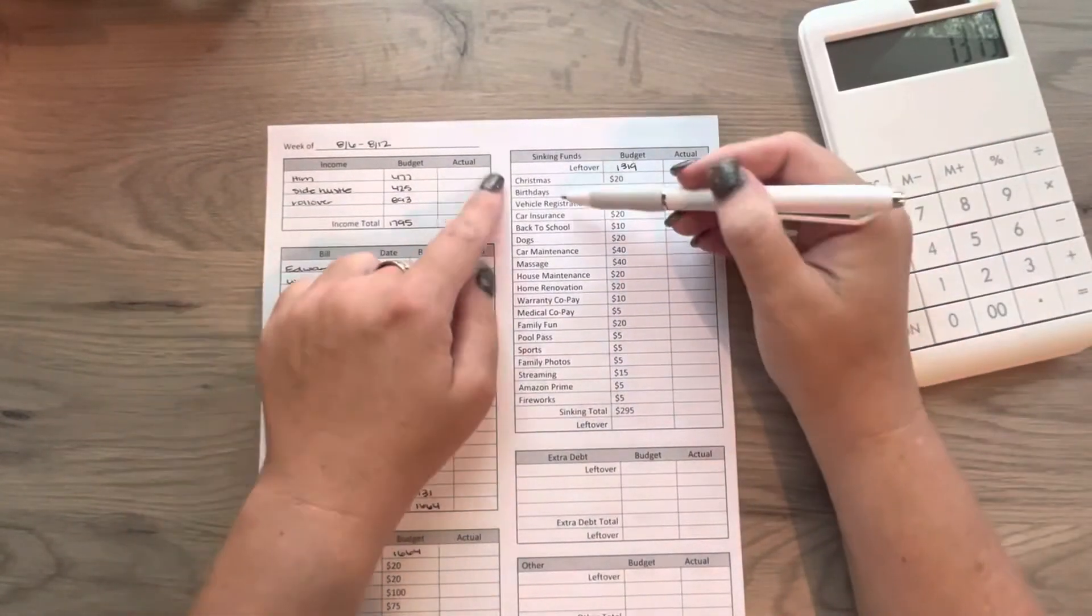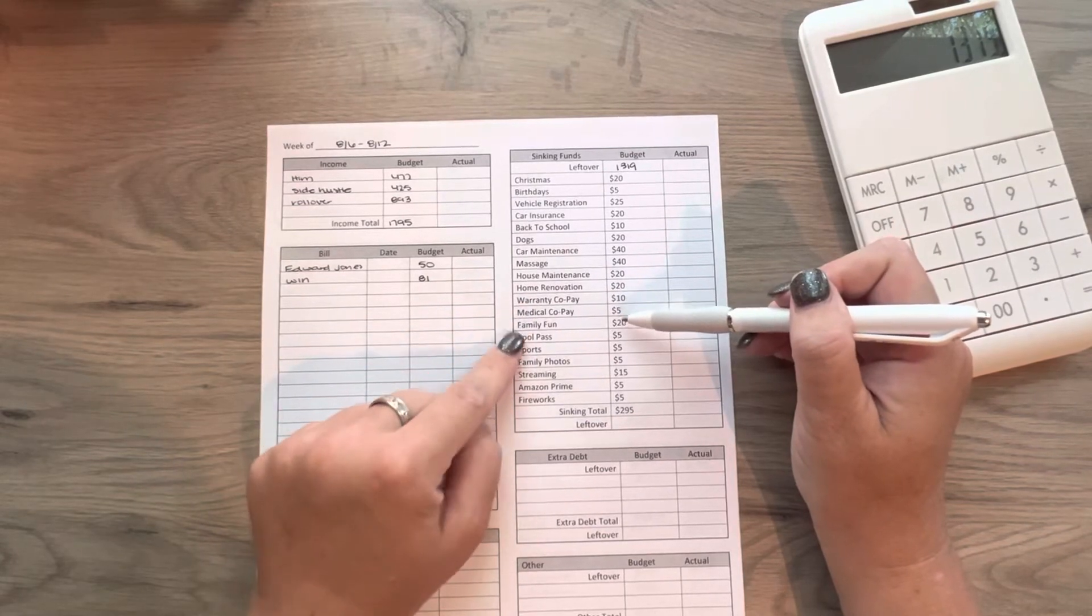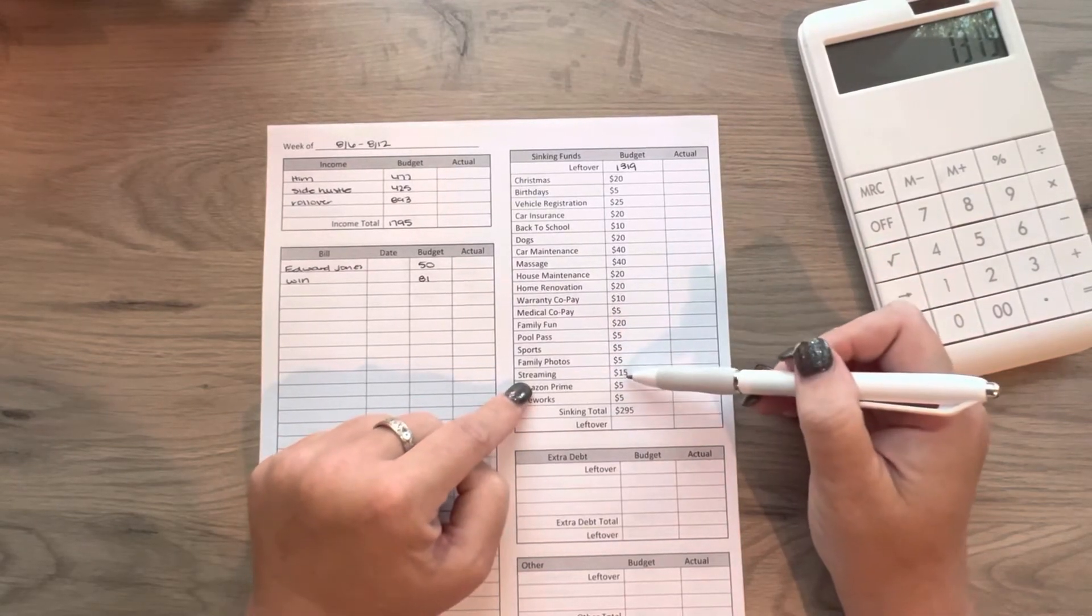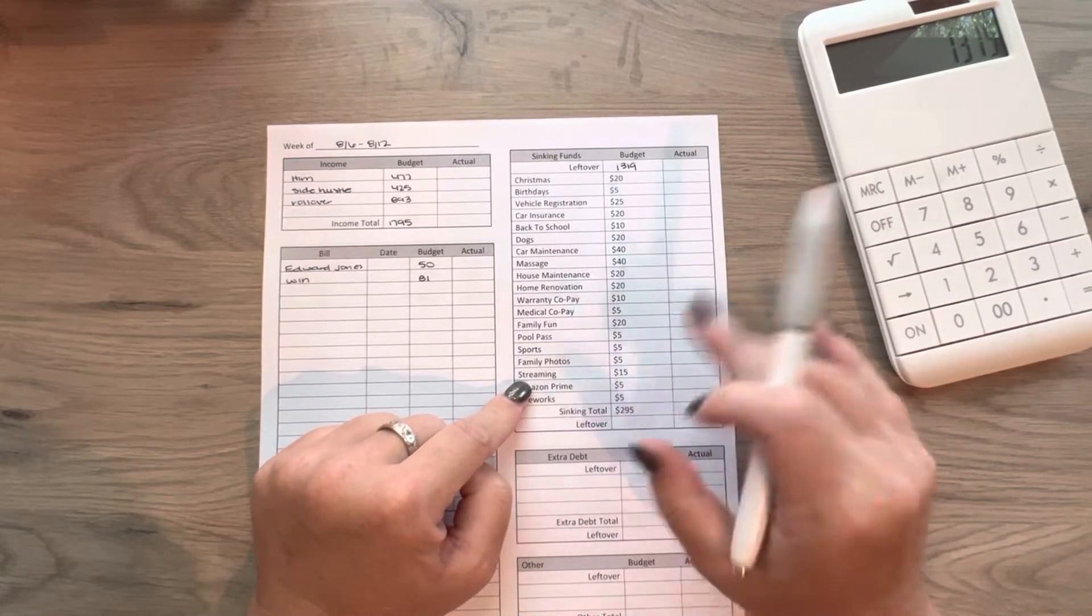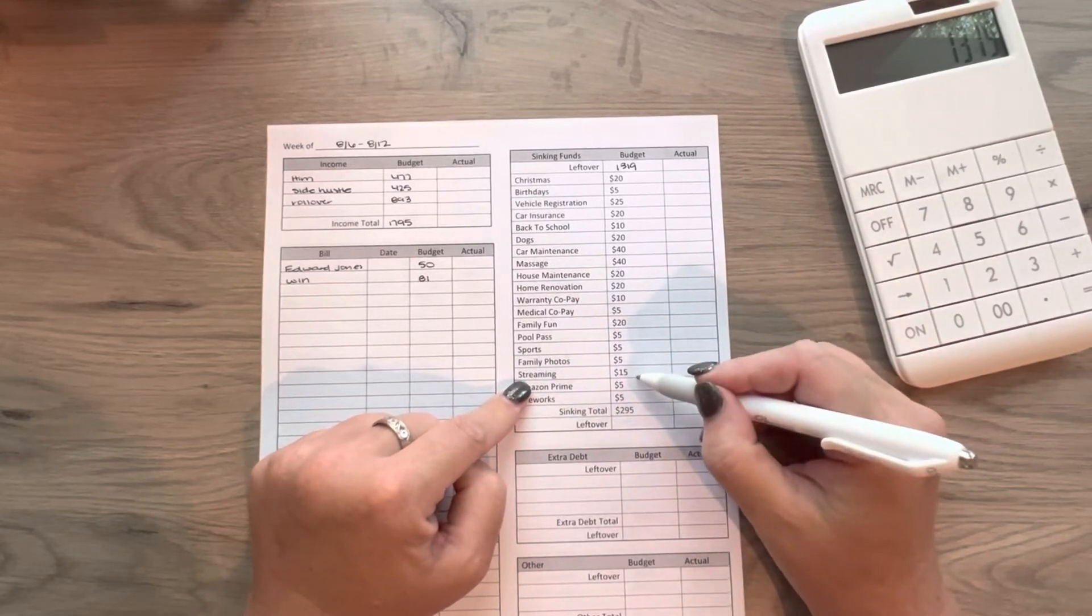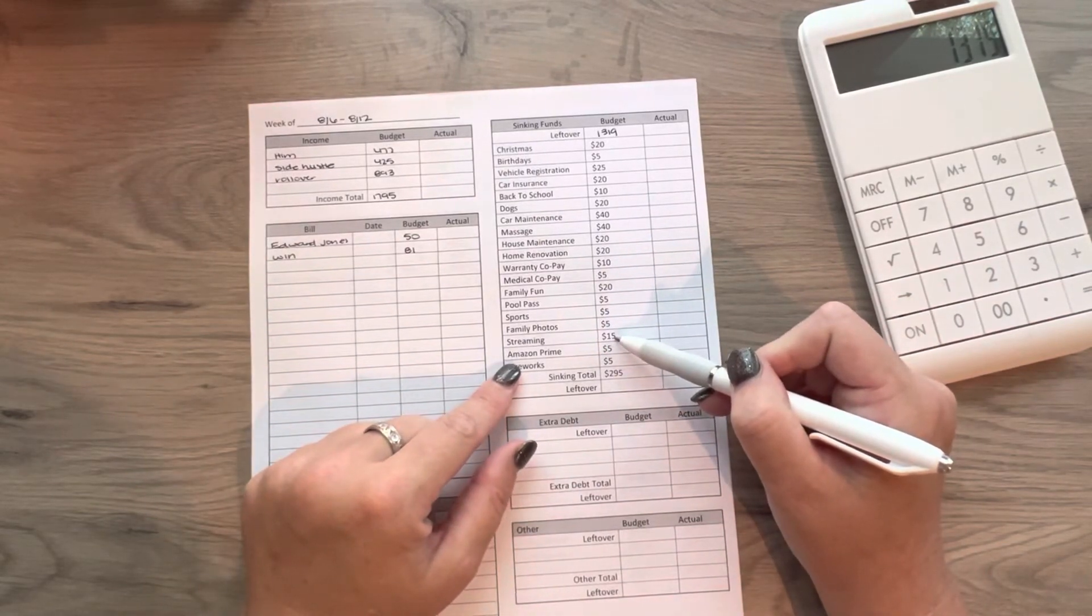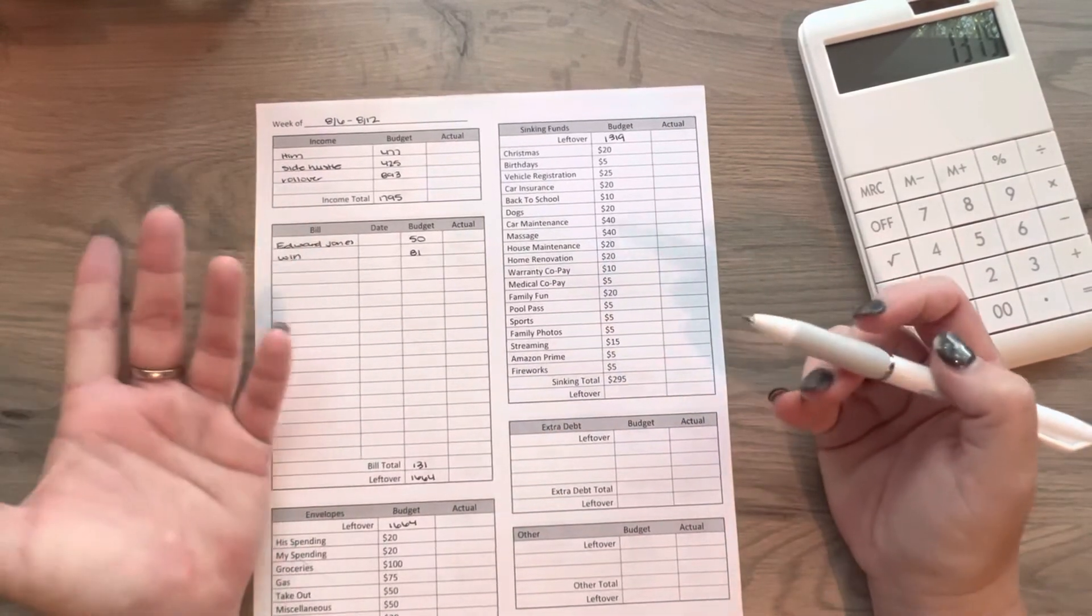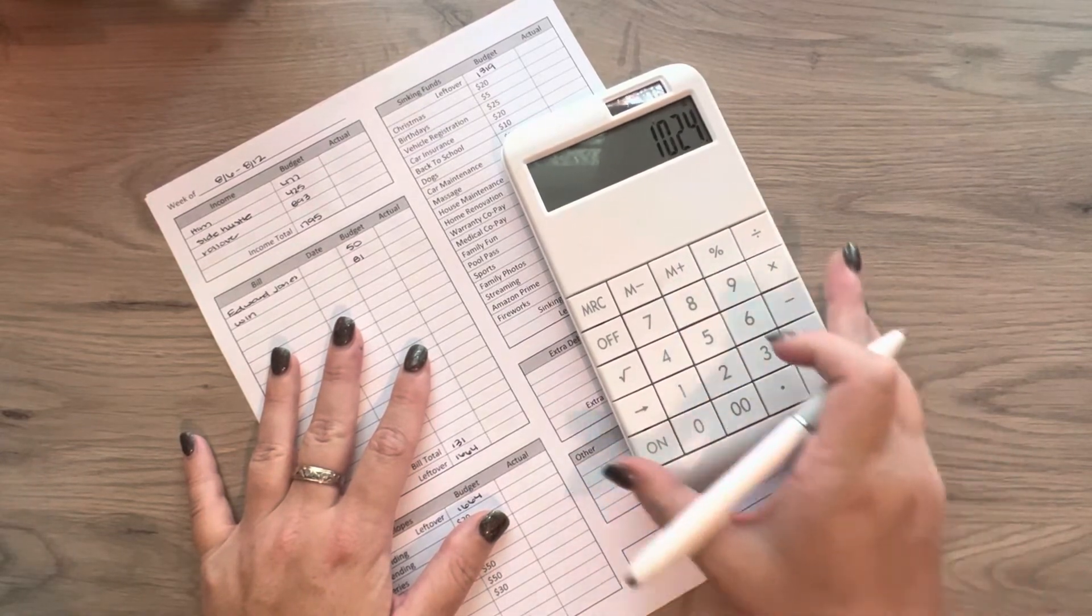And I'm going to go over these real quick. These are our normal ones, but we're adding in this week. I am going to add in these other ones. We've got house maintenance, home renovation, warranty co-pay, medical co-pay, family fun, pool pass, sports, family photos, streaming, Amazon Prime, and fireworks. Streaming, I am going to just transfer the $15 from my account that I have, my primary checking account to the account that I have the streaming account come out of. I have all those separate. I do that for most subscriptions. So that's just what I do for that. But so this is not going to be included in my cash stuffing, but it's included in the sinking fund. So anyways, these are $295. So $1,319 minus $295 is $1,024.